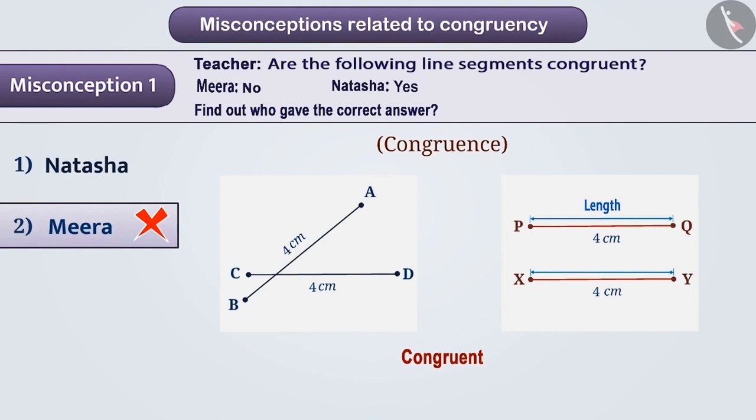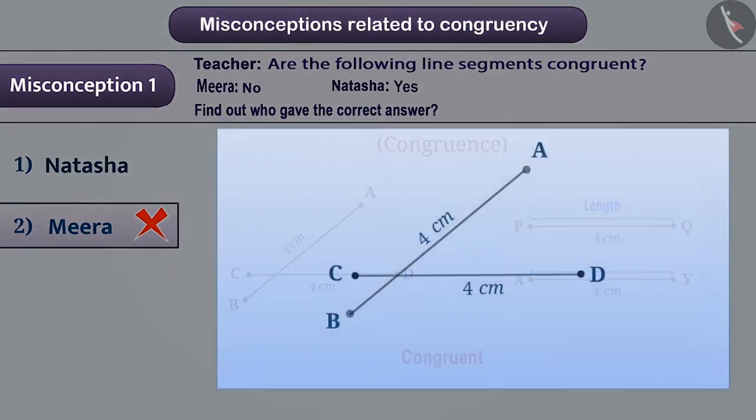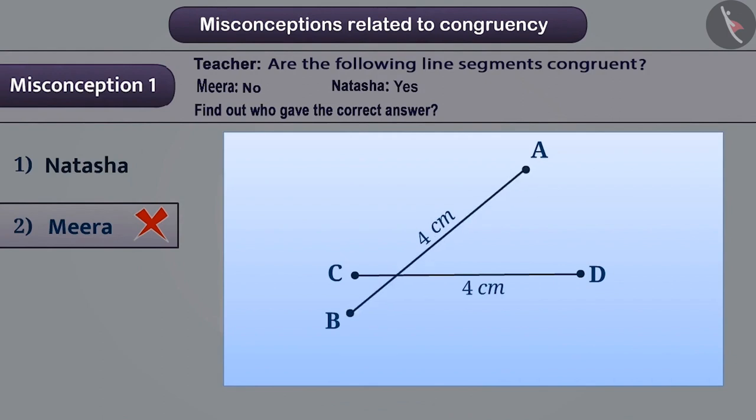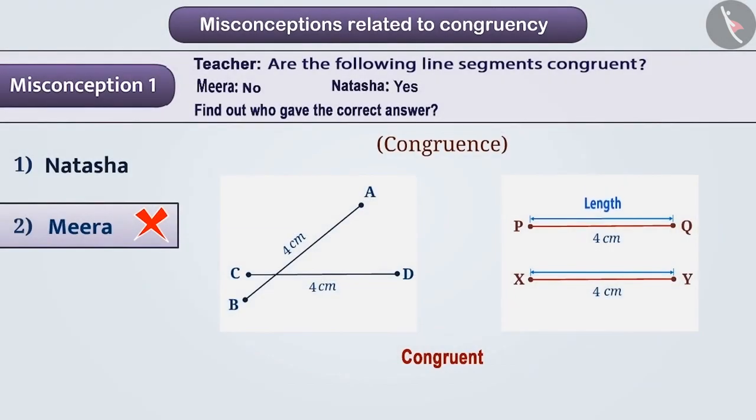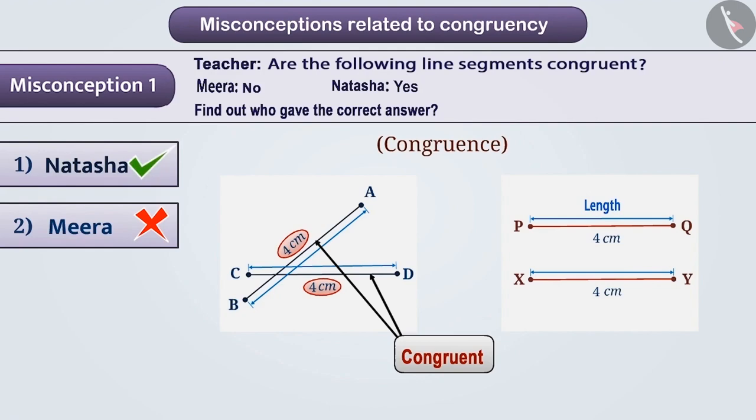The correct understanding is that it is wrong to see whether they are parallel to check the congruency of the line segments. So, here if one line segment is placed on another line segment, then we see that both line segments overlap with each other. Therefore, it is decided by length only whether they are congruent or not. Here the lengths of both line segments are the same. So, given line segments are congruent. That is why Natasha has given the correct answer. That is option 1 is the correct answer.